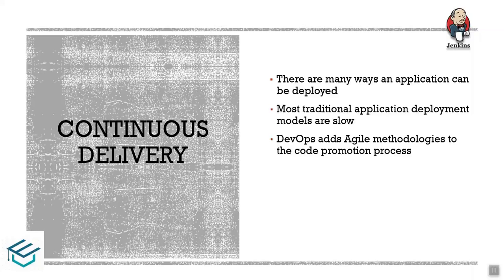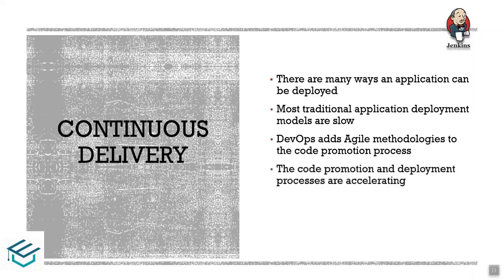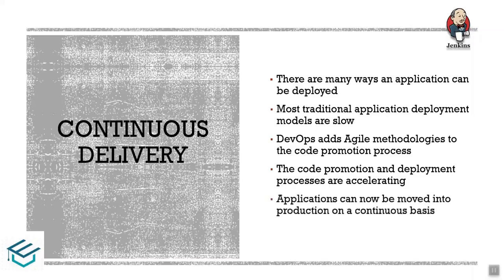With DevOps and agile methodologies, we use a code promotion process. The deployment process can run on the CI server, so our application moves professionally. The continuous pipeline — our continuous code promotion and deployment process — is automated, and our application goes to production continuously.